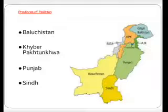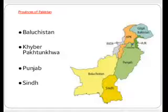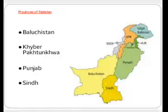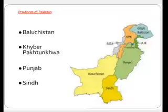KPK shares its border with Afghanistan. The next province is Punjab, which has the most fertile land. There are five rivers in this province and it shares borders with India. Now we are going to tell you about the next province, which is Sindh.